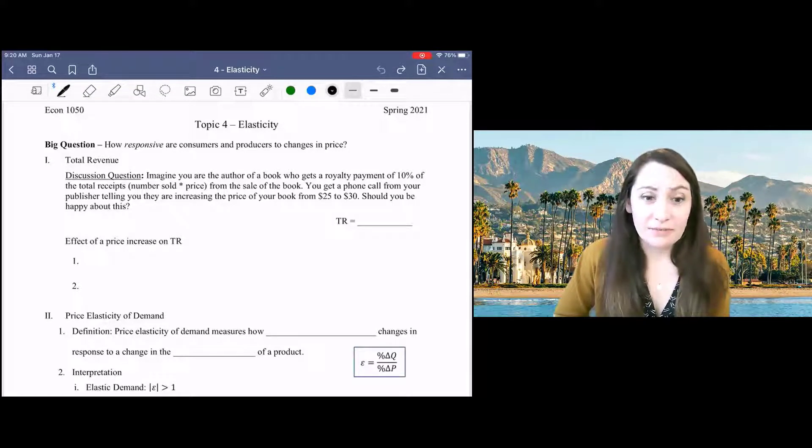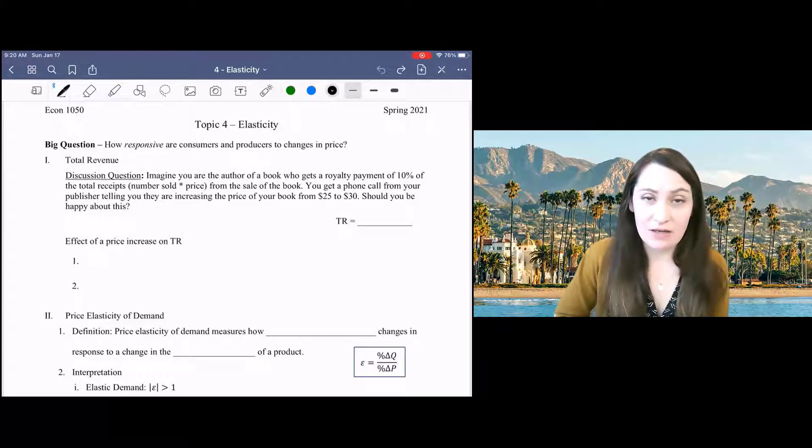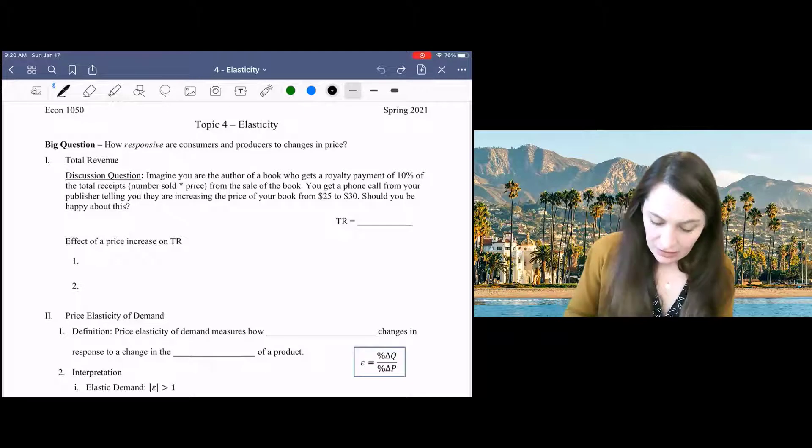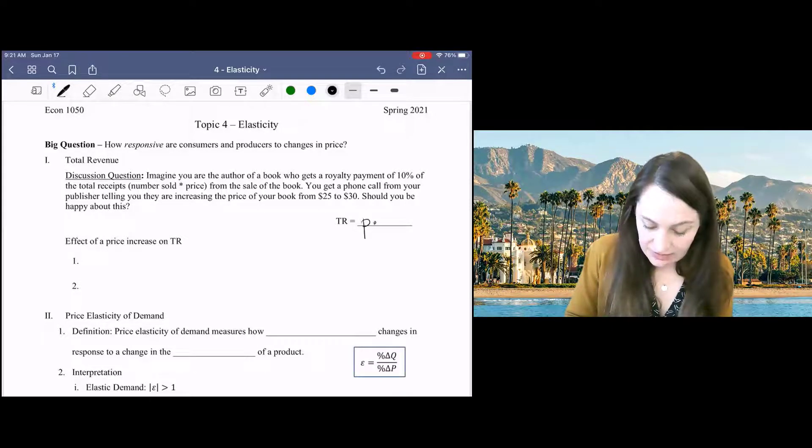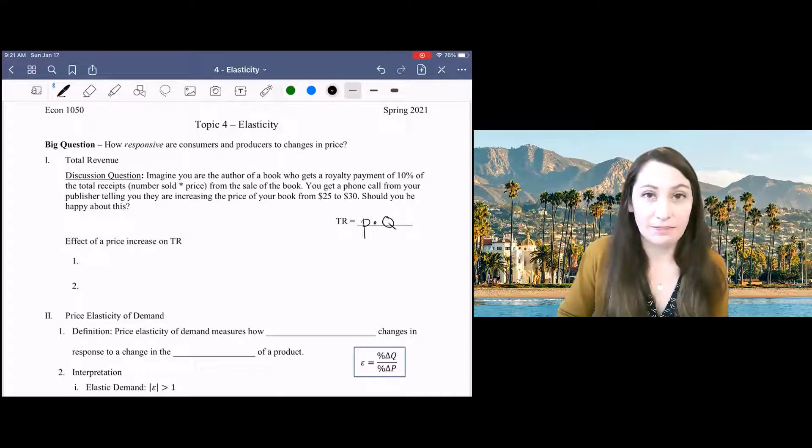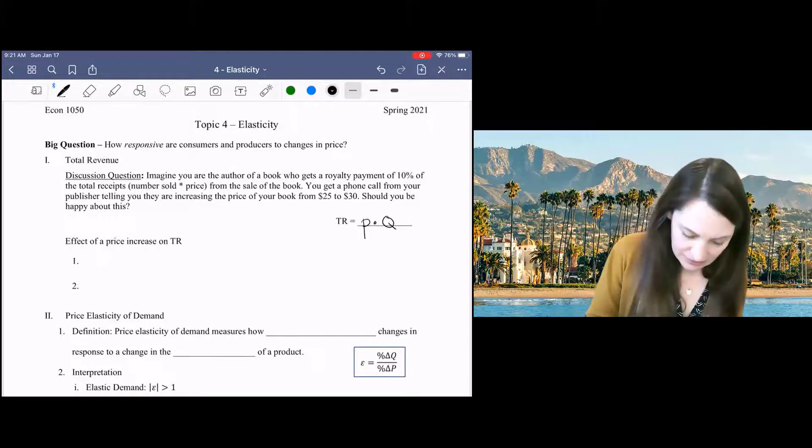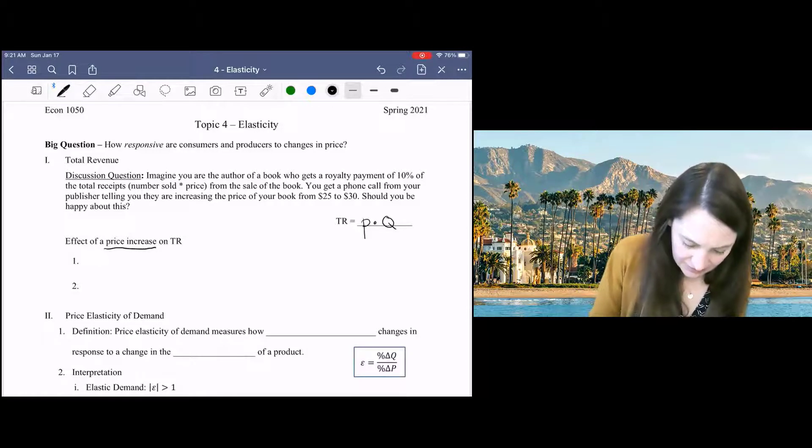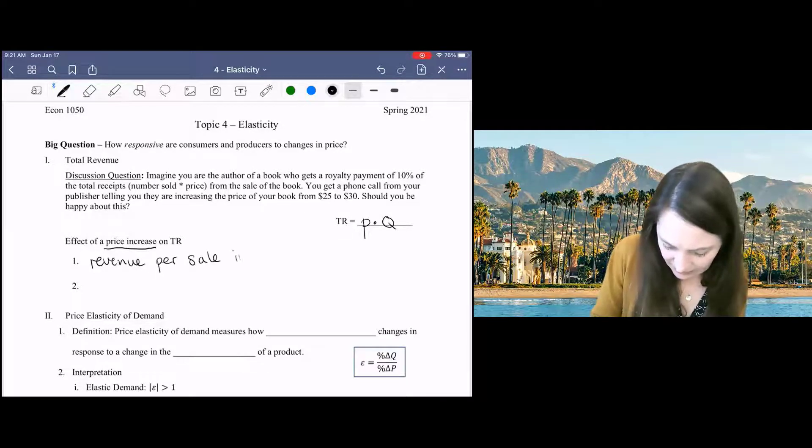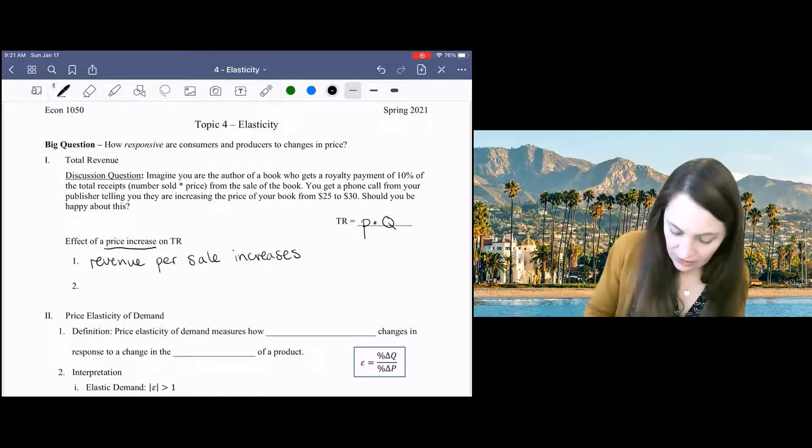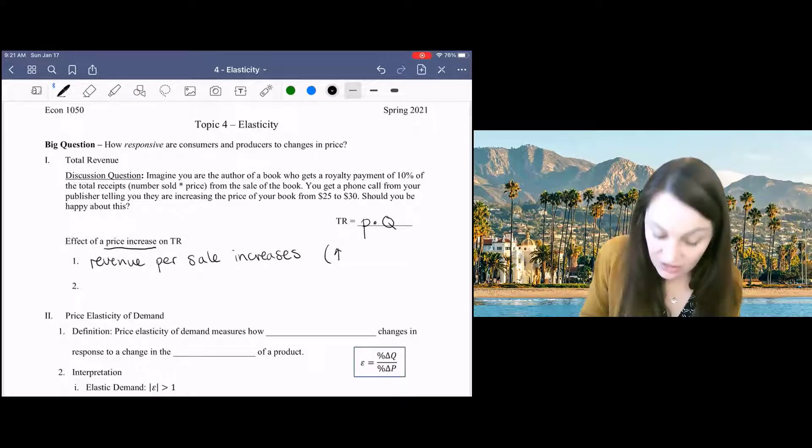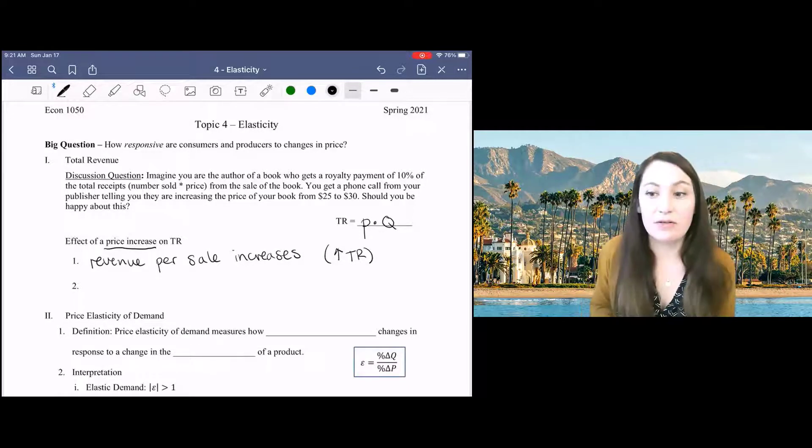The answer is actually unclear because the royalty payments are based on total revenue from book sales. And total revenue from book sales is equal to price times quantity. As the price of your book increases, of course, the revenue per sale will go up. So you may at first think that this is good and you'll earn more money. As the price increases, the revenue per sale increases, which should, other things constant, increase total revenue from sales.